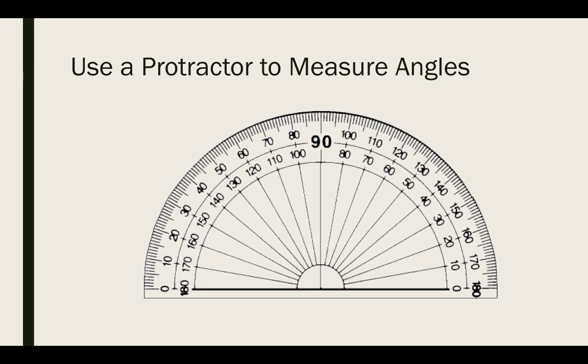When you use a protractor you need to put the vertex of the angle in the middle of the protractor as seen here. Also you'll be using the inside measure not the outside measures. For example this green angle is equal to 60 degrees. It would not be 120 degrees because that's the outside angle.